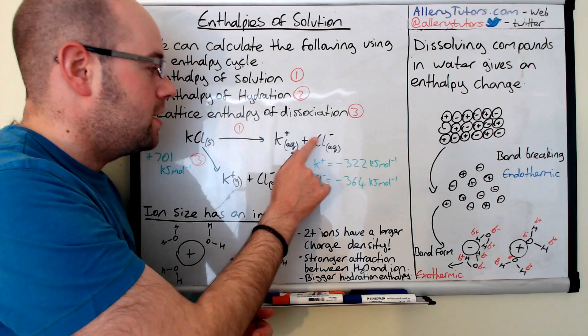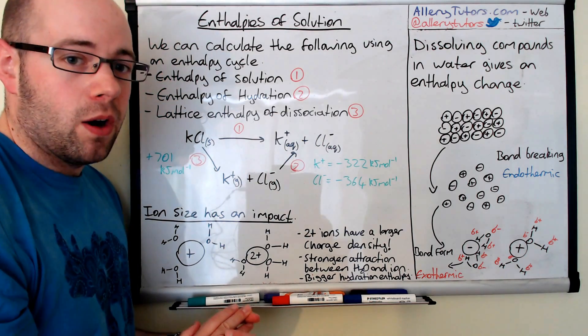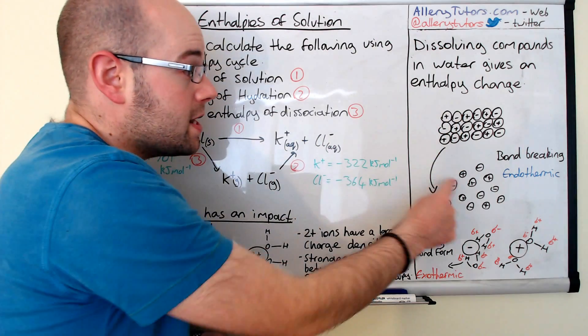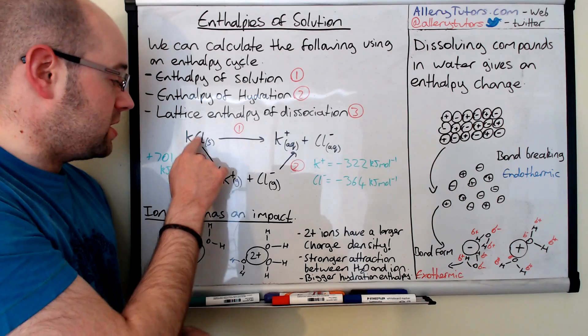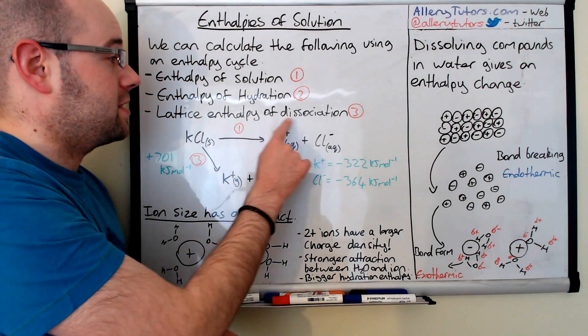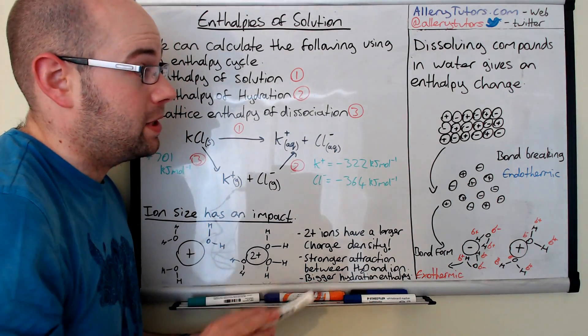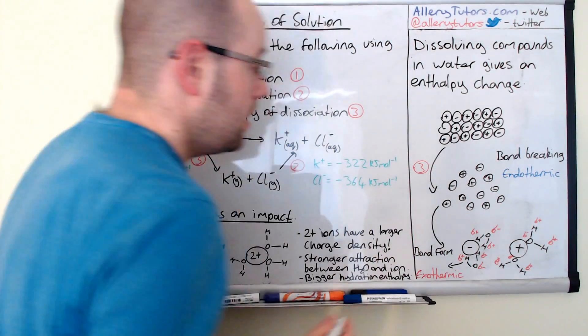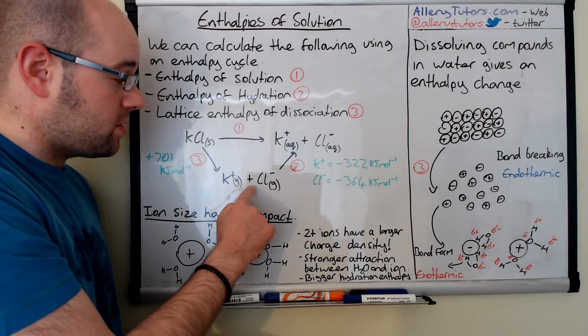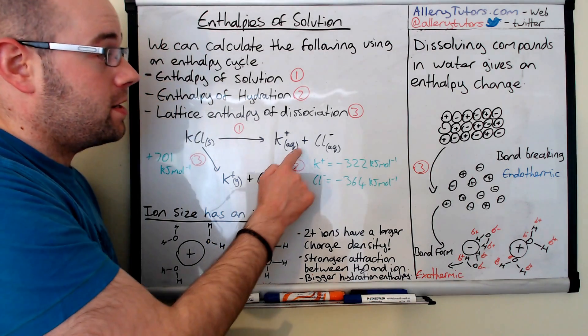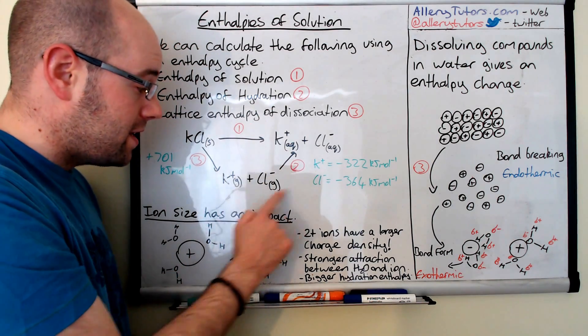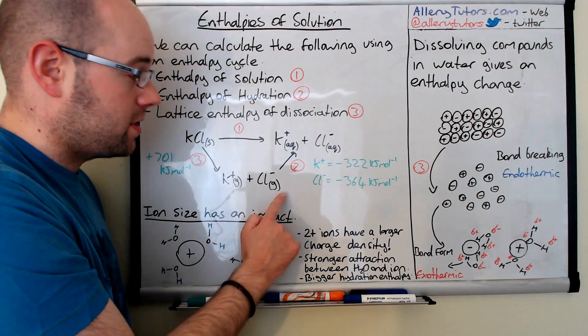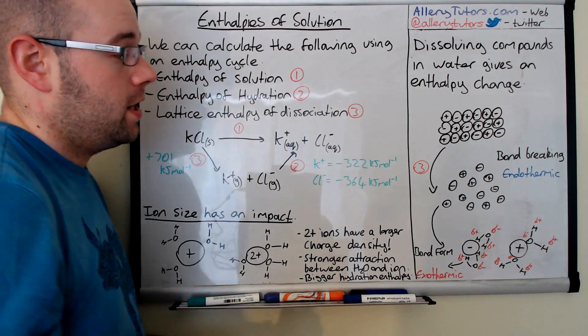This is our solid salt. When you're writing out this equation you should always write your solid compound here and then the aqueous ions here because this is the full steps going from this to this. This is the whole process and this is ultimately what we want to try and work out. This is called the enthalpy of solution. We've got an indirect pathway which is this here.